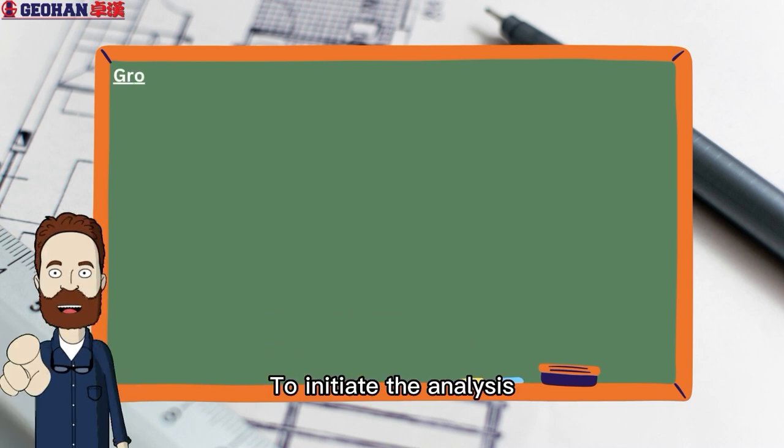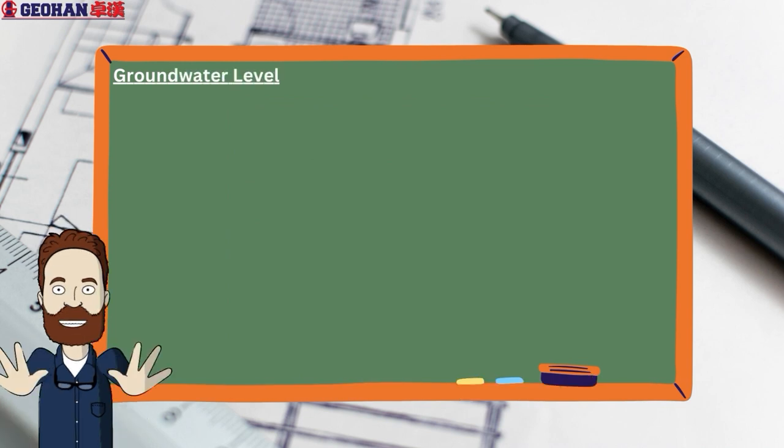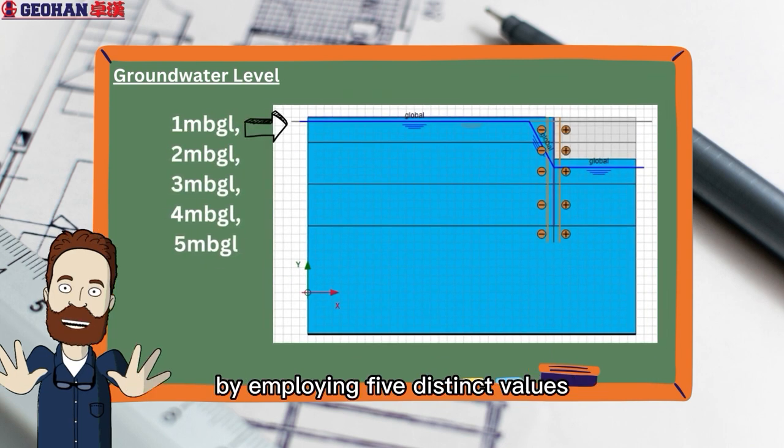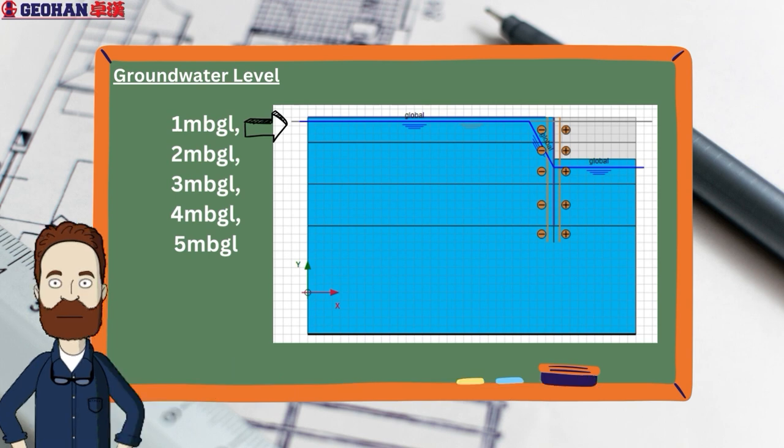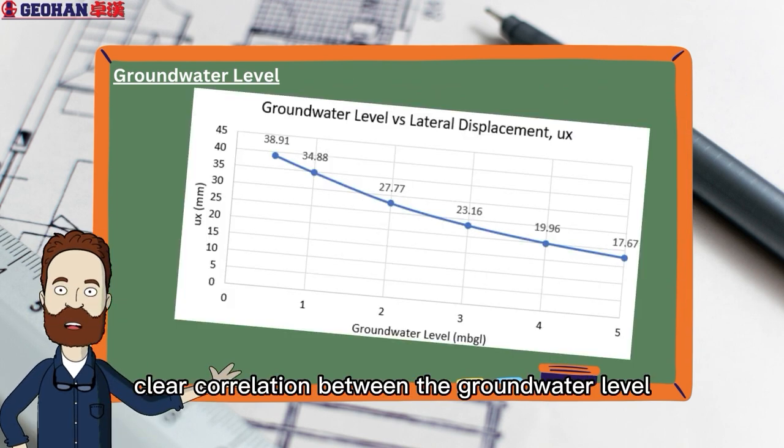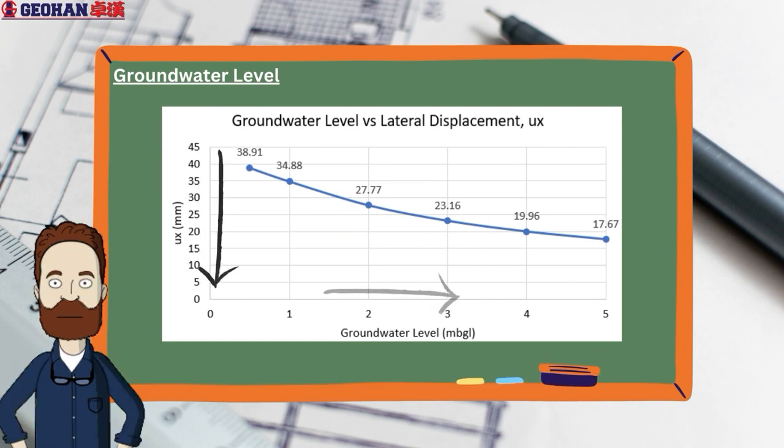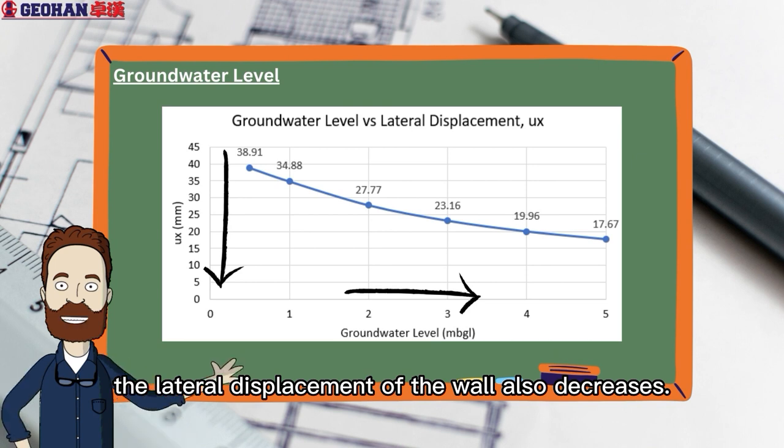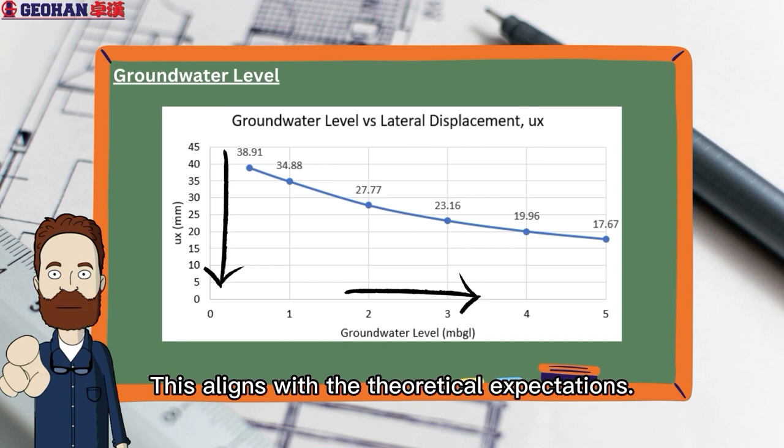To initiate the analysis, our first step involves adjusting the groundwater level. Specifically, we manipulate the groundwater level by employing five distinct values ranging from 1 to 5 meters below ground level. The findings reveal a clear correlation between the groundwater level and the lateral displacement of the wall. As the groundwater level lowers, the lateral displacement of the wall also decreases.